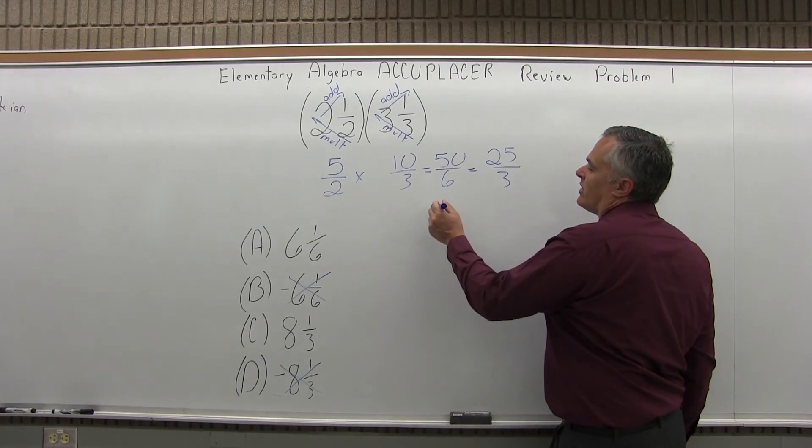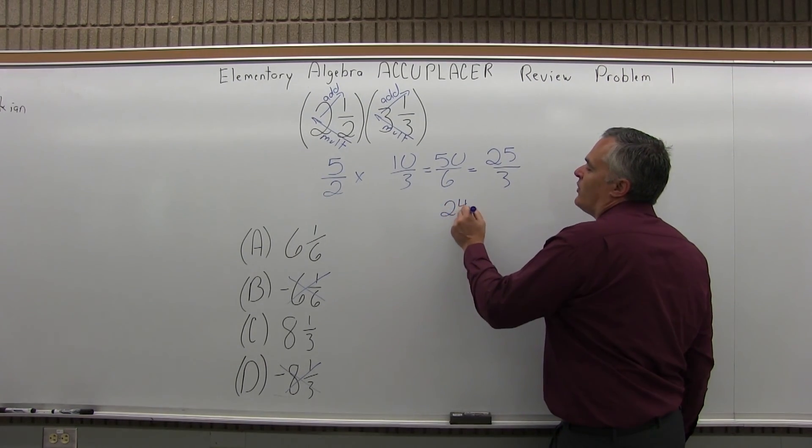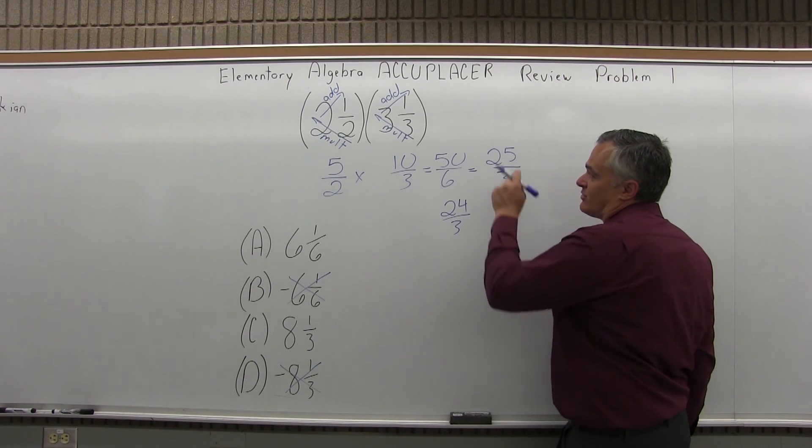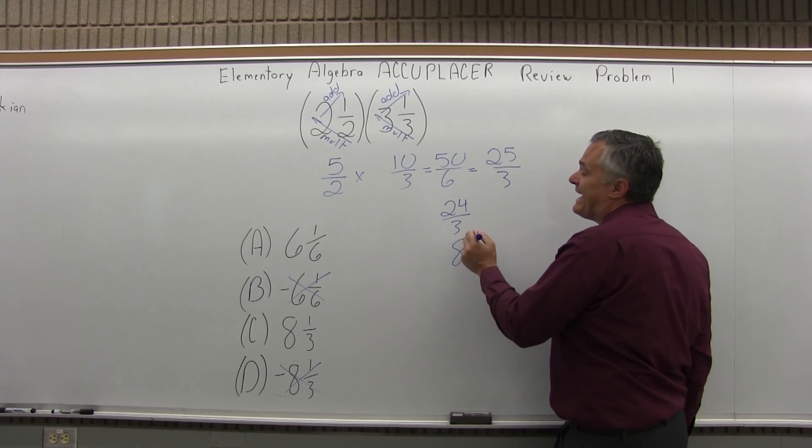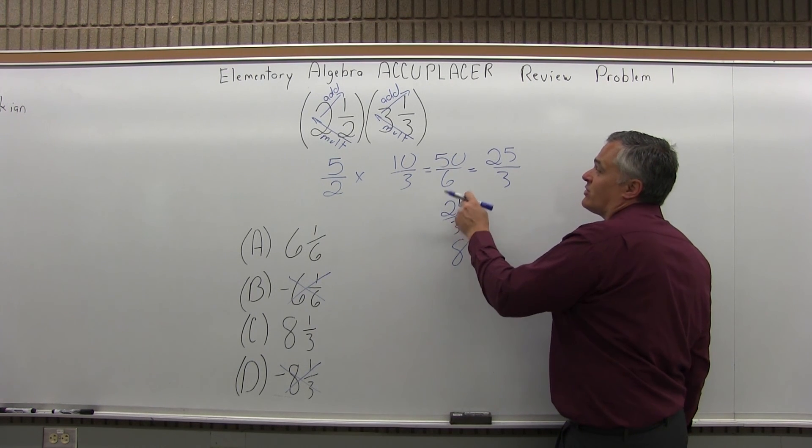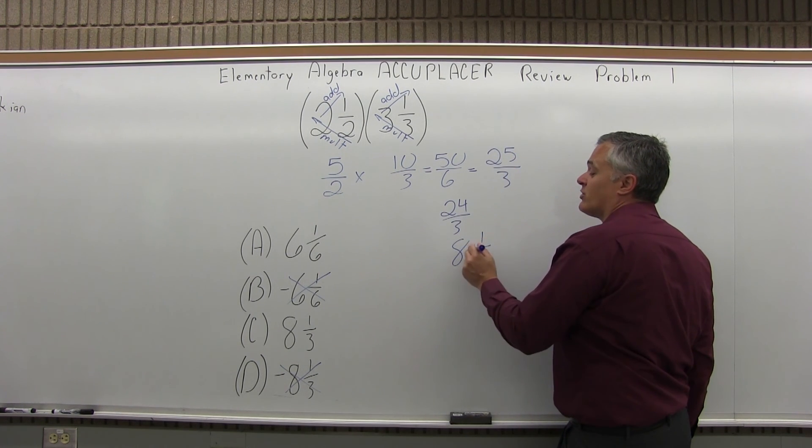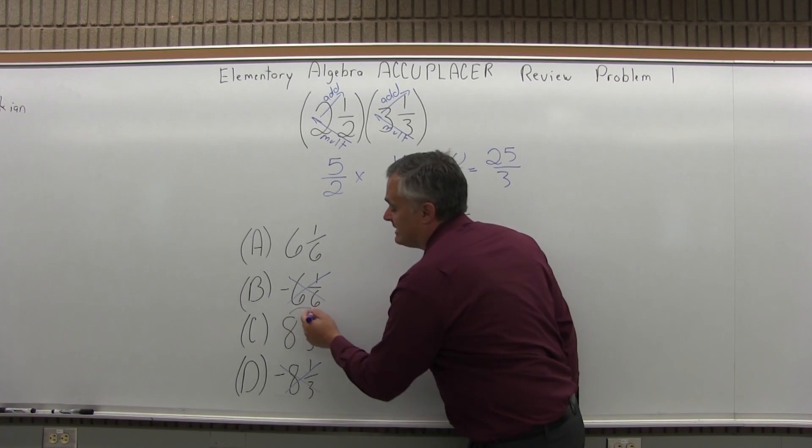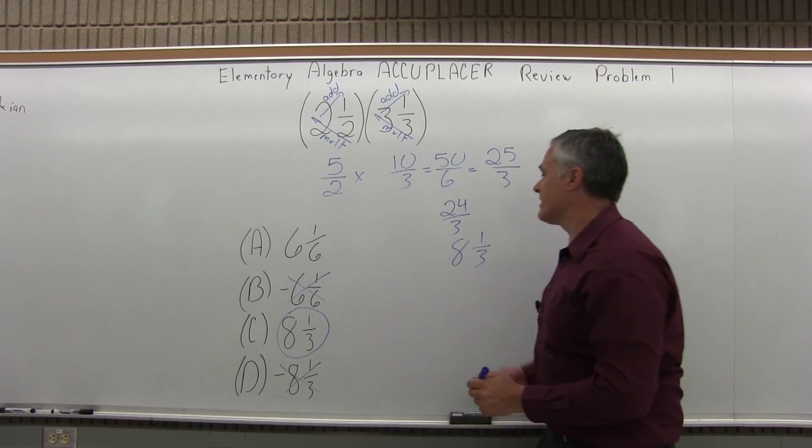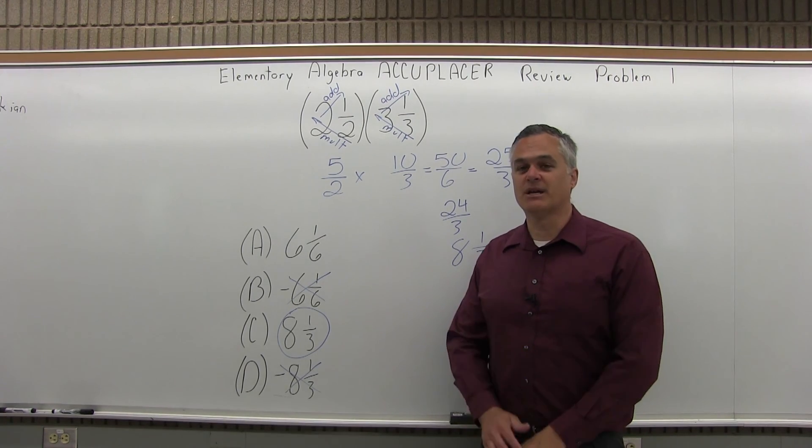So 25 thirds, 24 thirds is pretty close. 24 thirds will reduce to 8. And if I have 24 thirds, 25 thirds is 1 more third. So 8⅓, which is positive. So the answer is C, 8⅓ is a perfect match once I simplify my answer.